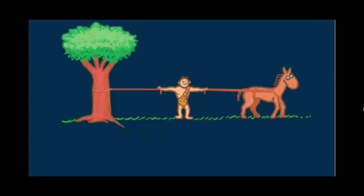Here we see Sammy Strongman being pulled by two ropes. One tied to a tree and the other to a horse. Sammy is okay with the tensions in the ropes. He's a strong guy.